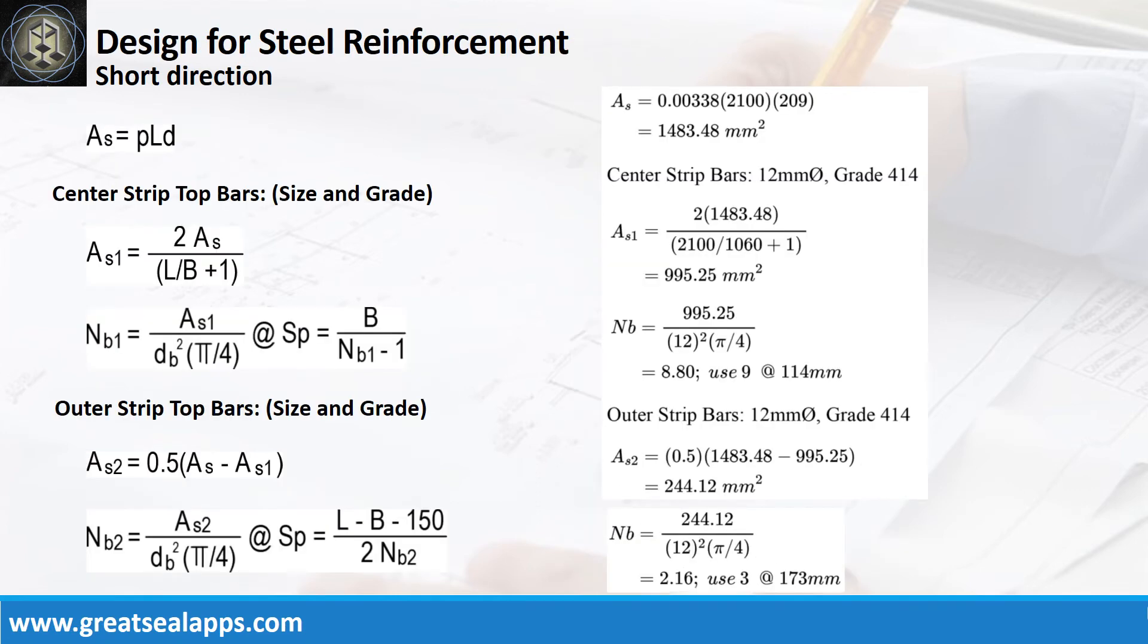Continue at short direction. Given rho equals 0.00338, L equals 2,100mm, and D equals 209mm, the area of steel for short direction bars is 1,483.48 mm². The area of steel at center strip is 995.25 mm², and the number of bars for 12mm bar is 9, 3 on each side.